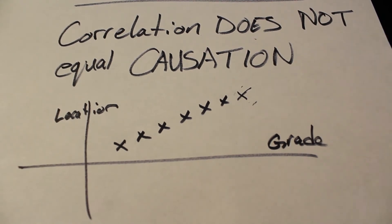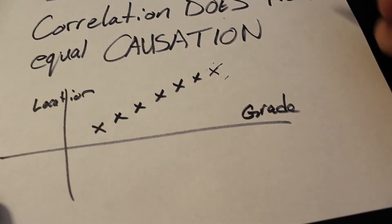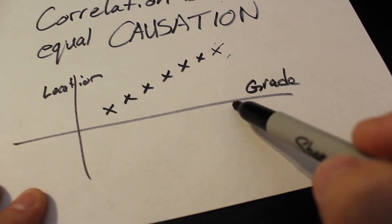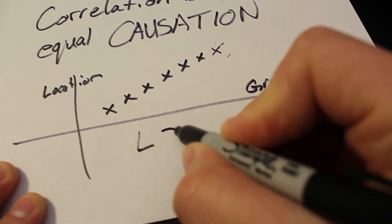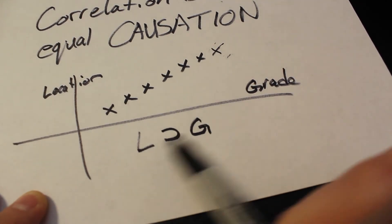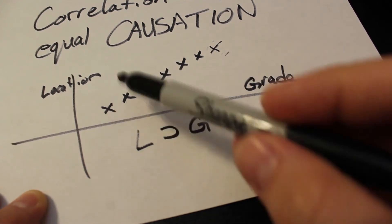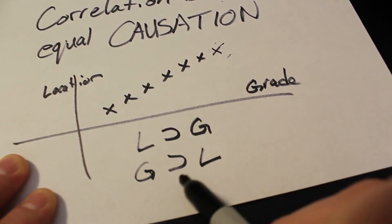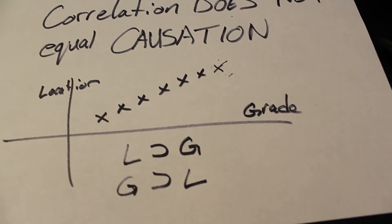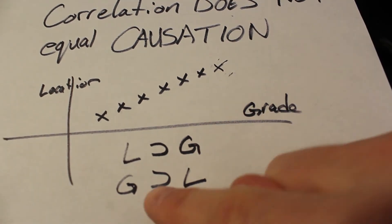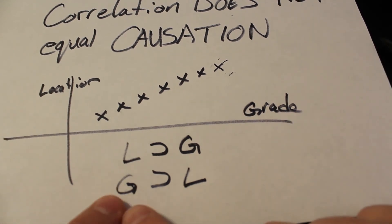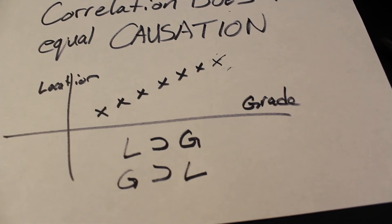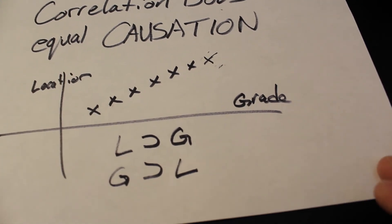To assume that correlation equals causation would be to assume a kind of inverse or converse error. Suppose the location implies the grade — whoever chooses that location determines the grade they get. That does not necessarily mean that a given grade will absolutely imply a specific location. It appears the location determines the grade, but it hasn't been proven that the grade determines the location. You can't assume the grade determined the location just because you've determined that the location determines the grade. That's the converse error, and unfortunately it's made a bit too frequently.